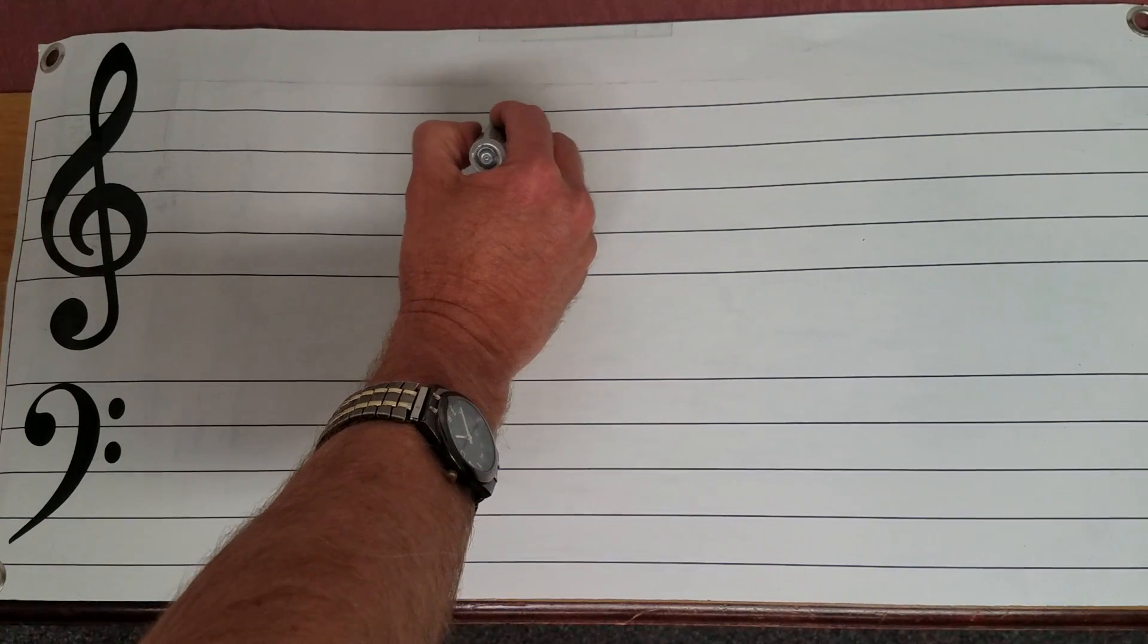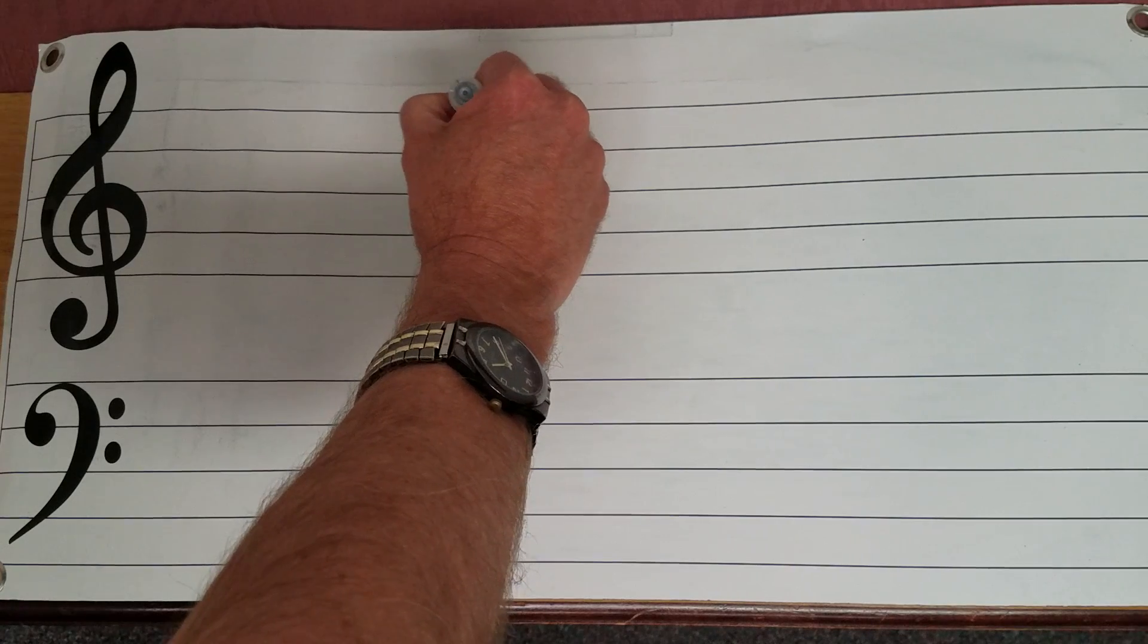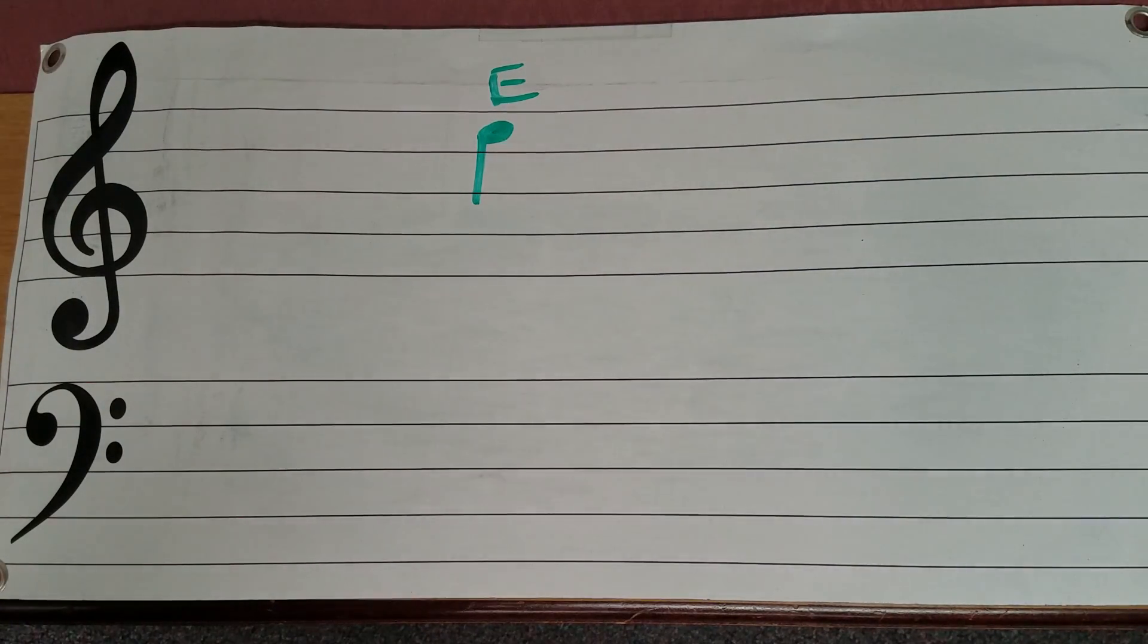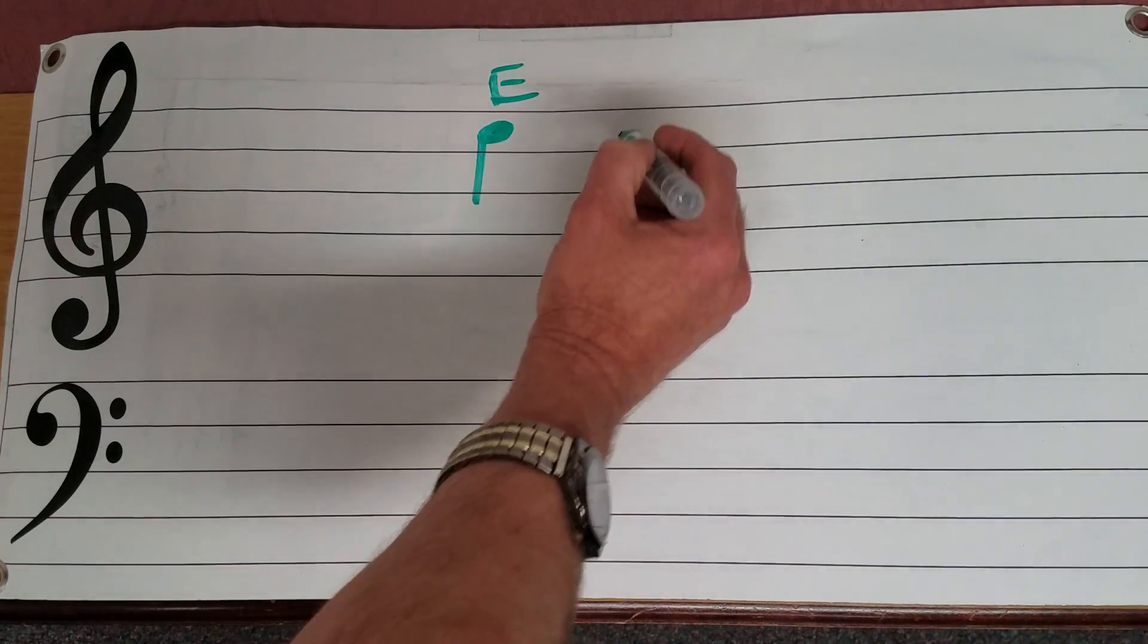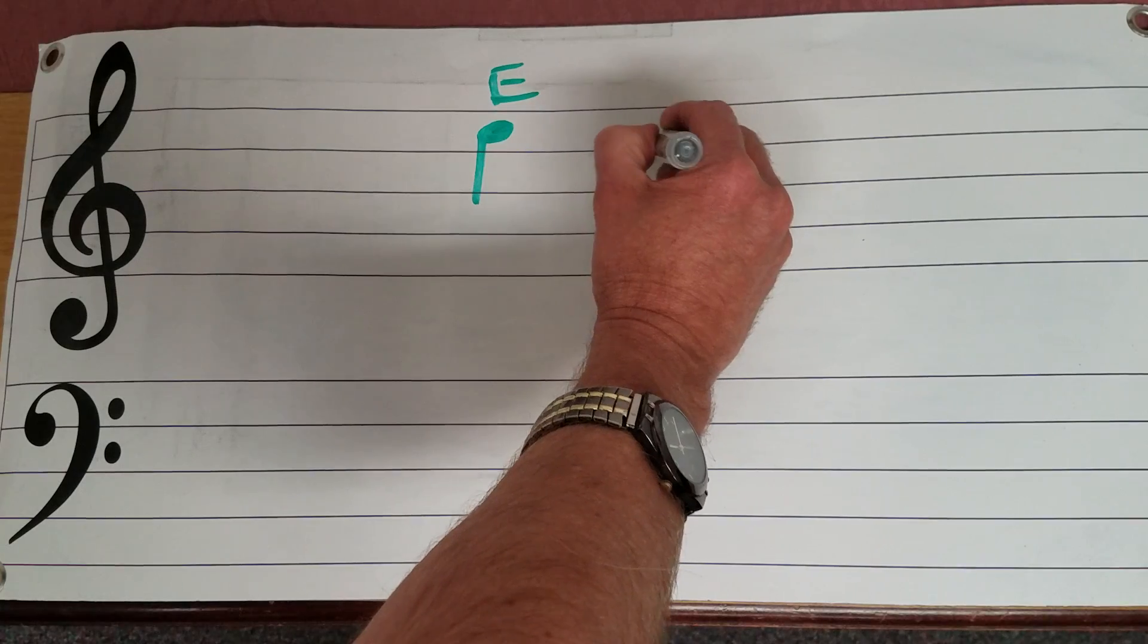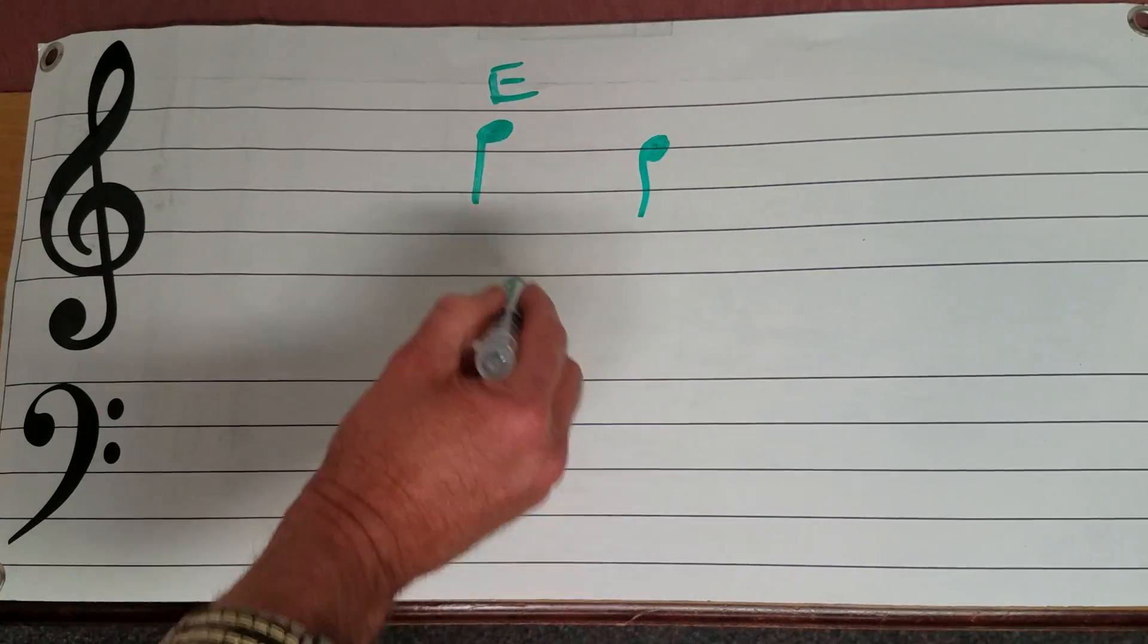So in today's lesson, I want to introduce a couple of new notes. Now, back in the lesson before last, I introduced the higher E up here. So what I'd now like to do is show you a note in relation to that E. We're going to look at the one below it, and then after that, the one above it. But for now, look at this.